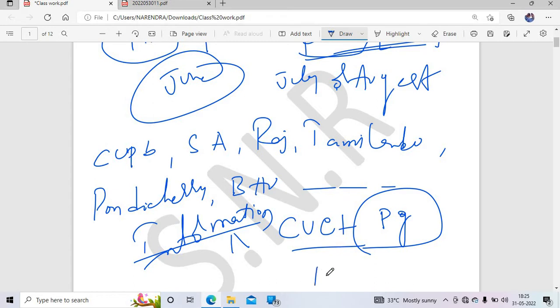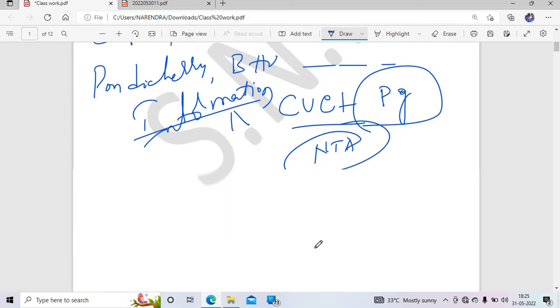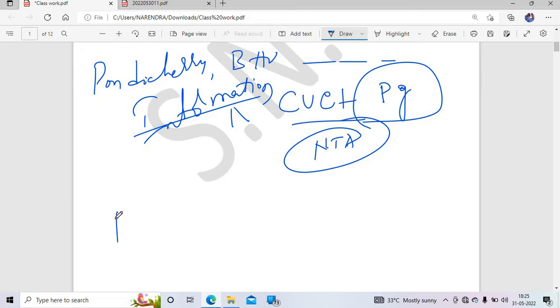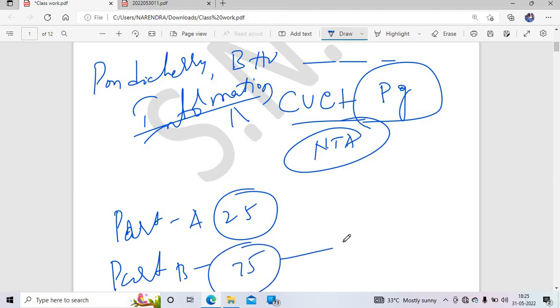Coming to the exam pattern, it's the same as last year. Part A has 25 questions with common syllabus for all subjects. The remaining 75 questions are from your subject. For statistics, these 75 are subdivided into 25 mathematics questions and 50 statistics questions.